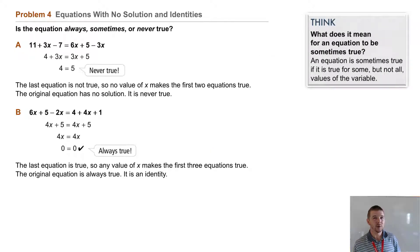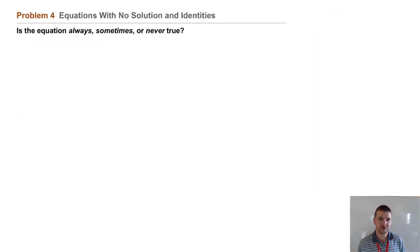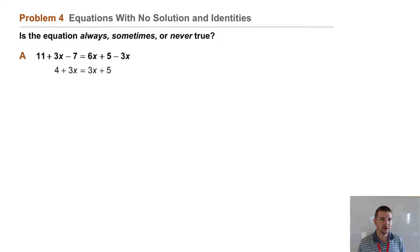Problem 4. Equations with no solution and identities. Is the equation always, sometimes, or never true? Part A. The equation 11 plus 3x minus 7 equals 6x plus 5 minus 3x.